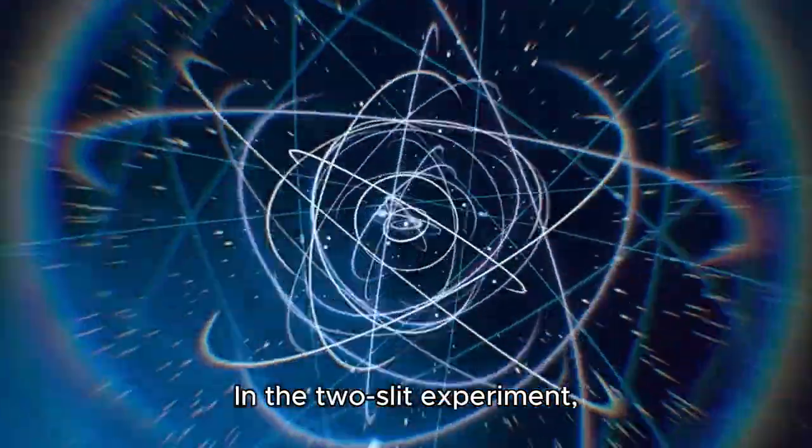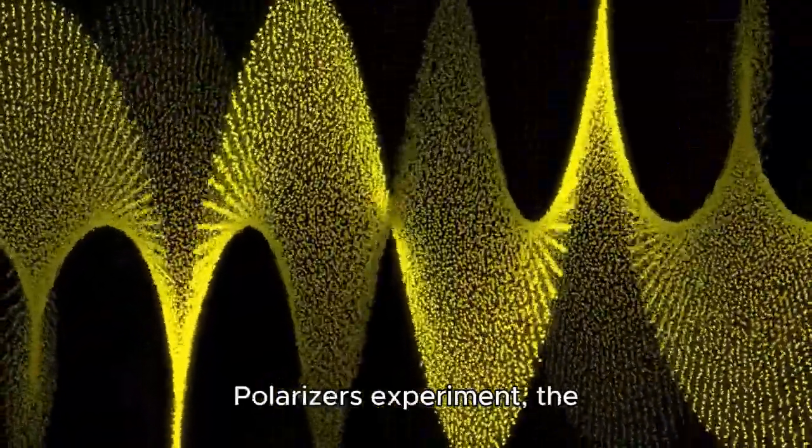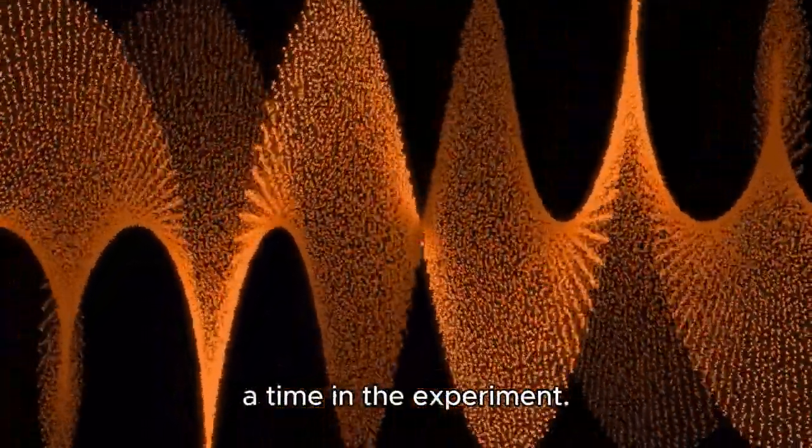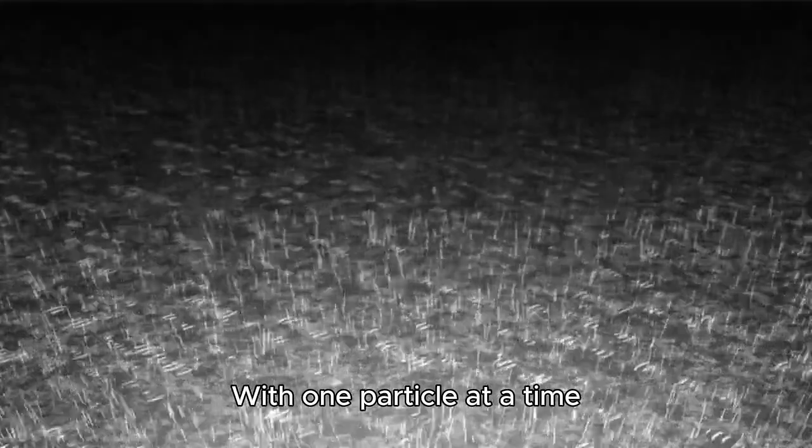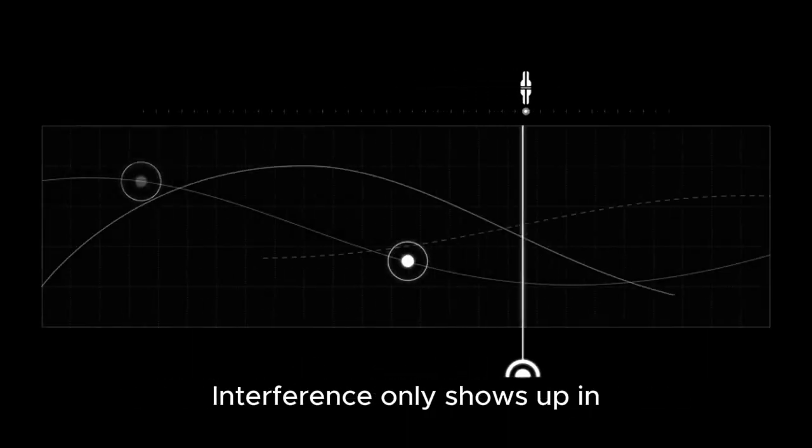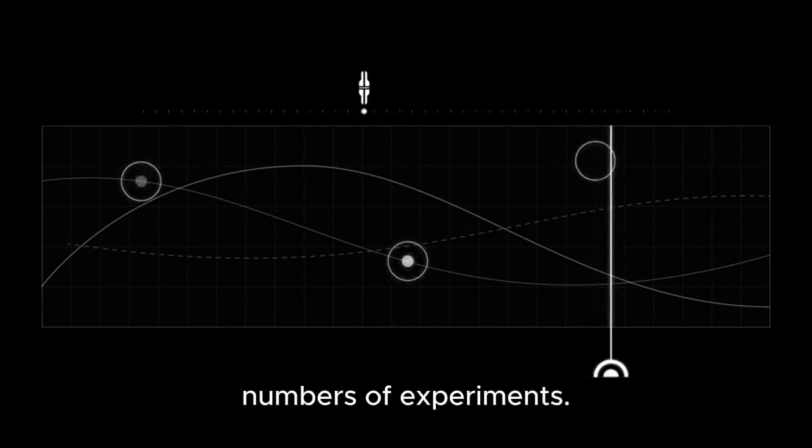In the two-slit experiment, just as in the three polarizers experiment, the critical case to consider is just one photon or electron at a time in the experiment. With one particle at a time, whether photon or electron, the quantum object is mistakenly described as interfering with itself, when interference is never seen in a single event. Interference only shows up in the statistics of large numbers of experiments.